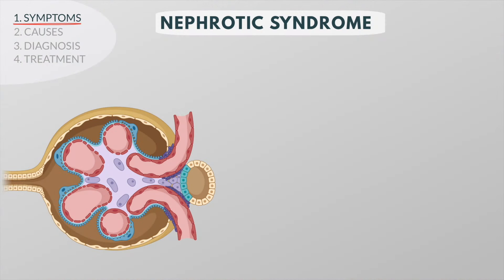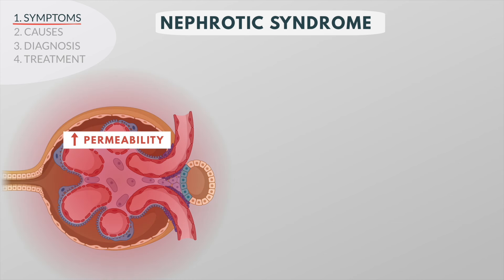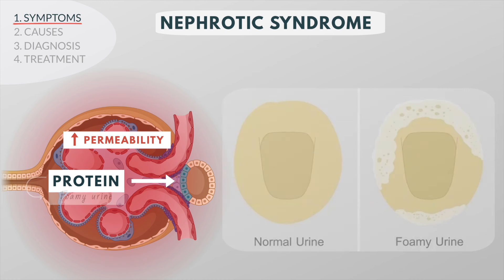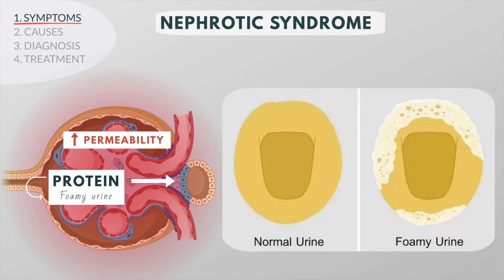In nephrotic syndrome, the kidney injury is manifested as an increase in permeability of the capillary wall of the glomerulus, allowing too much protein to leak from the blood into the urine. One of the main clinical signs of proteinuria is foamy urine.